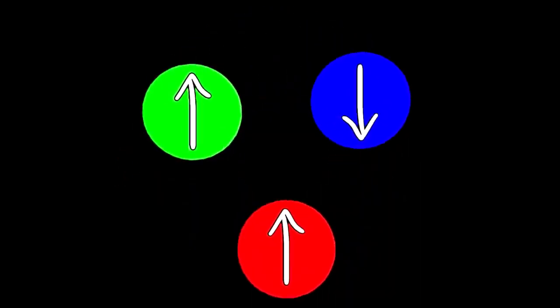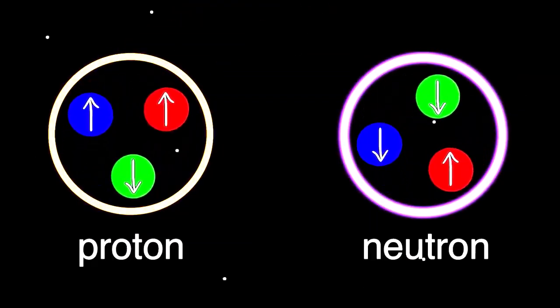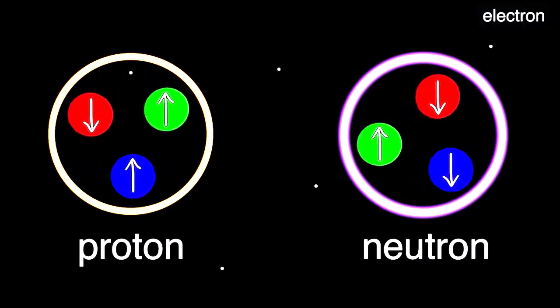Great news, the quarks are now happily married in groups of three, called a proton or a neutron. And there's something else flying around too that wants to join in but can't because it's still too...